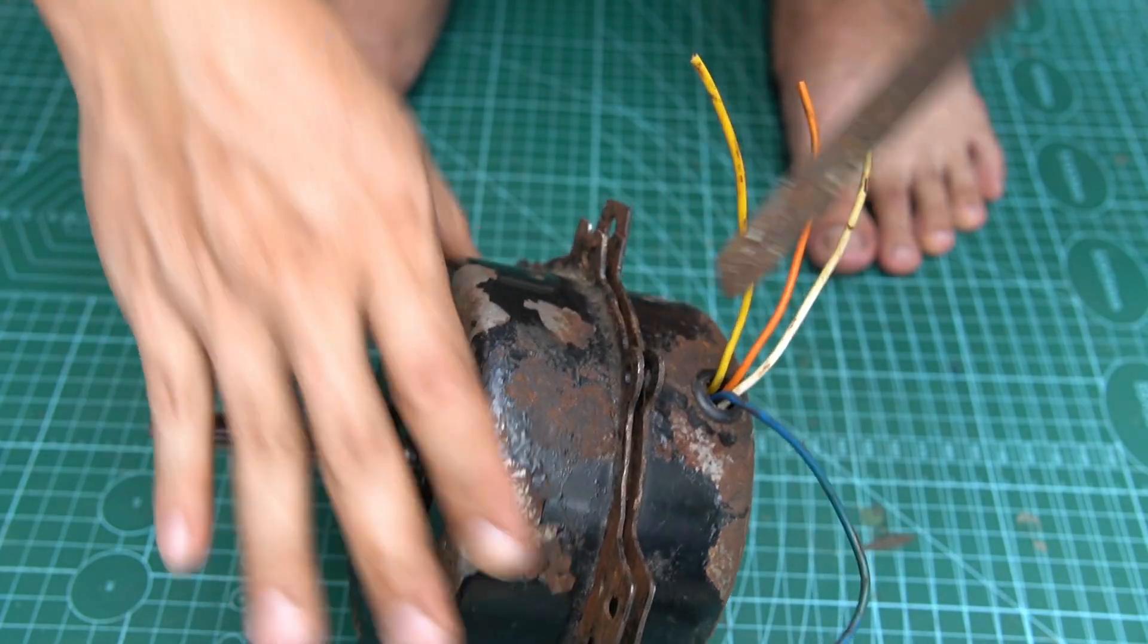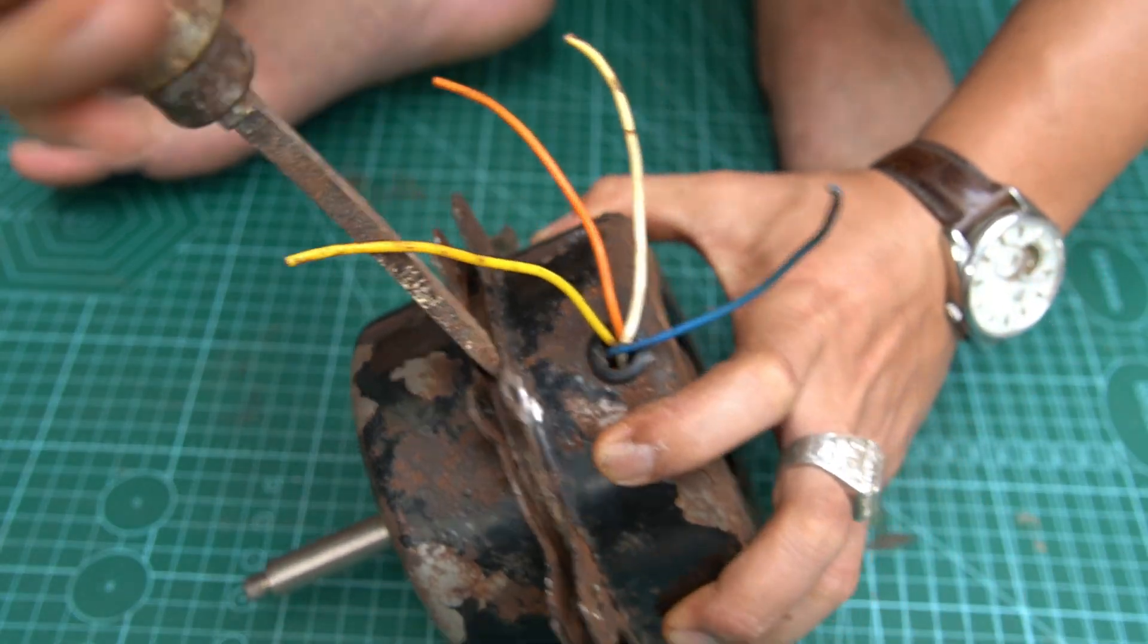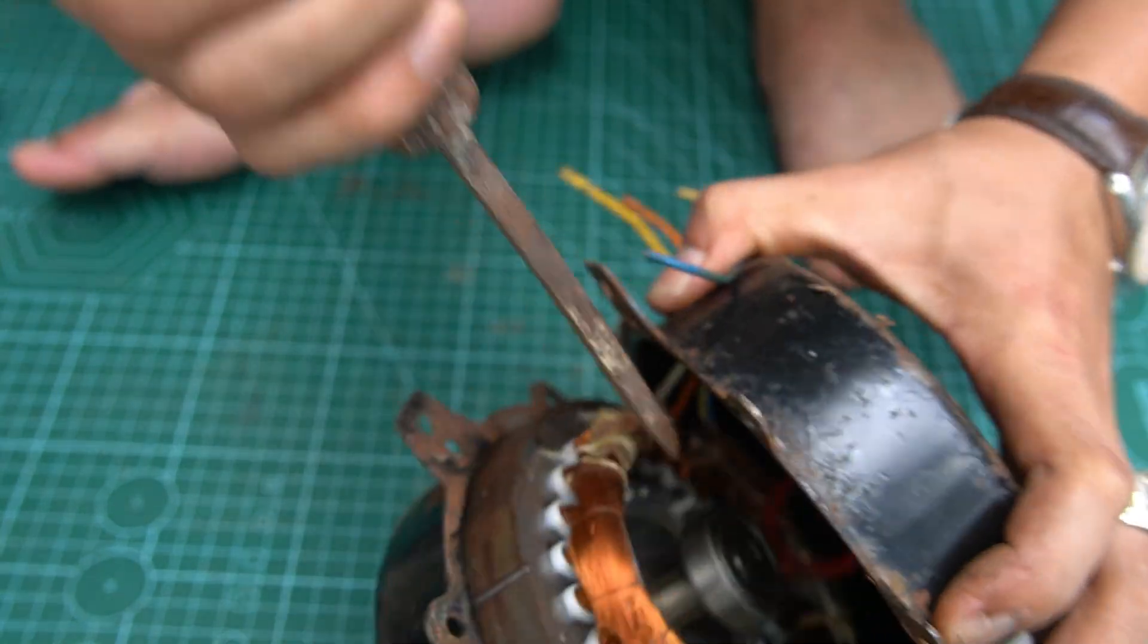I'll remove the outer casing of the motor. Be careful while doing this so you don't damage the inner parts, because we'll reuse many of them to build our perpetual generator.